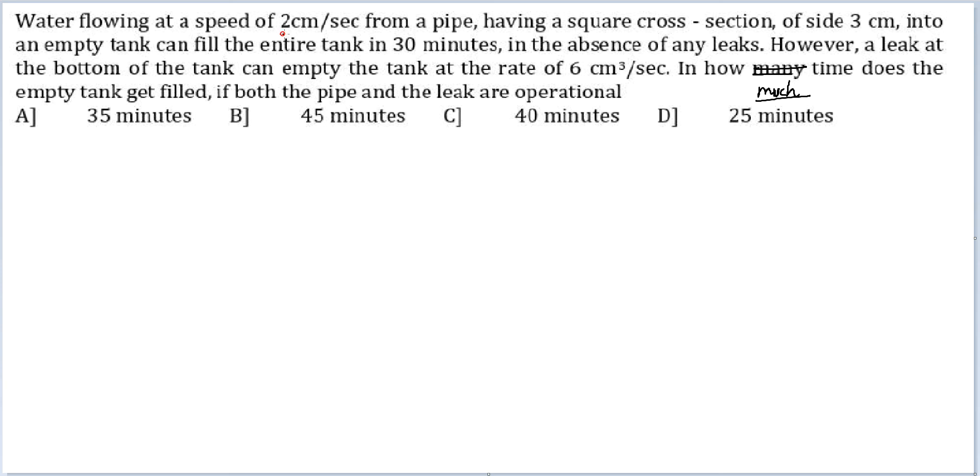Okay, the rate at which water was going in - see there is a square cross section of side 3, so the cross sectional area would be 9. Where v is 2, so water was going in at the rate of 18 earlier and then it was taking 30 minutes.